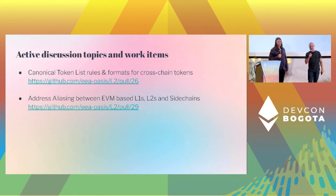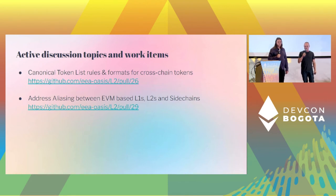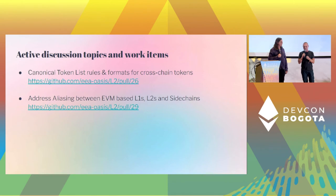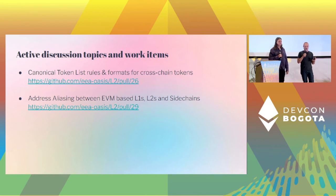So what have we been working on? There are lots of ideas for standards development topics in the Layer 2 ecosystem. The two that have gotten the most work done: first is a canonical token list format. Most Layer 2 projects have a list of tokens on their Layer 2s and how they map to a Layer 1 token or a token on another Layer 2. These lists are not maintained in any common standard format, so standardizing them would benefit interoperability. The second is address aliasing — the goal is to deterministically derive addresses of a digital asset or an externally owned account on an EVM execution framework when it moves across chains, so you can deterministically derive the address on another chain.